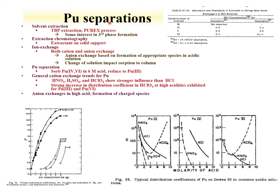Solvent extraction of plutonium with tributyl phosphate is well-known and is part of the Purex process. There is also some interest in third-phase formation. Ion exchange and extraction chromatography are well-known for laboratory-scale separations. Trends can be based upon oxidation state — for instance, sorption onto a strong-base anion exchange resin in HCl: plutonium-3 is not absorbed, while the 4, 5, or 6 are sorbed at different HCl concentrations depending on their oxidation state. A route for purifying plutonium is to sorb it to an anion exchanger, then reduce it, and upon reduction to the 3, the plutonium is released.